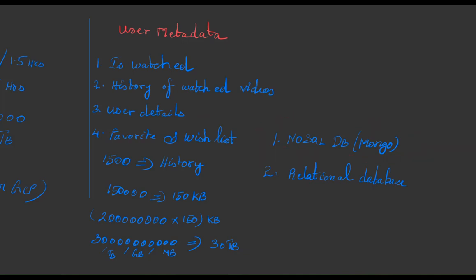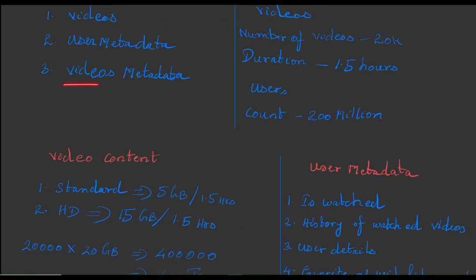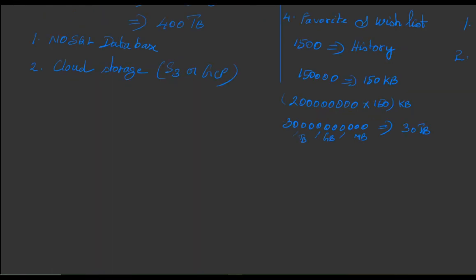The next type of data that we have is video metadata. What are the data we are going to store as part of video metadata? First one is video descriptions, video reviews, likes, unlikes, video title. So these are some of the data that we will be storing as part of video metadata.